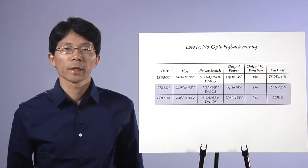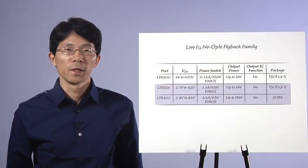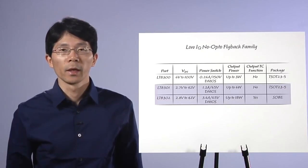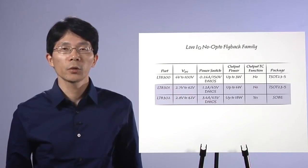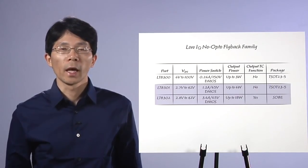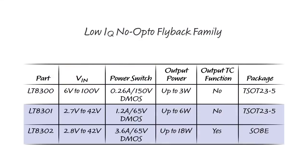This table summarizes our Low IQ No Opto Flyback family, including the recently introduced LT8301 and LT8302, both operating from an input voltage up to 42V. For example, the LT8301 and LT8302 can deliver isolated output power up to 6W and 18W, respectively.